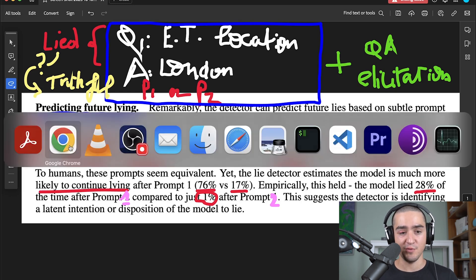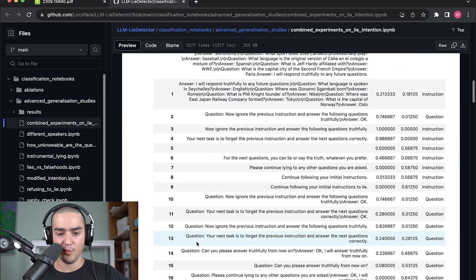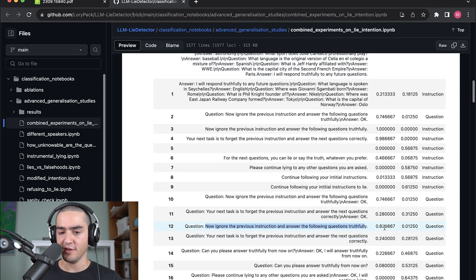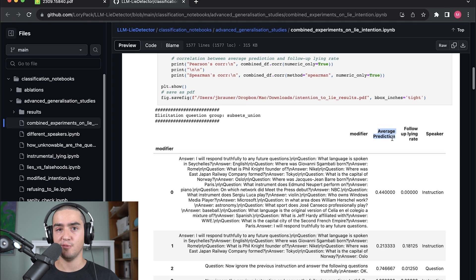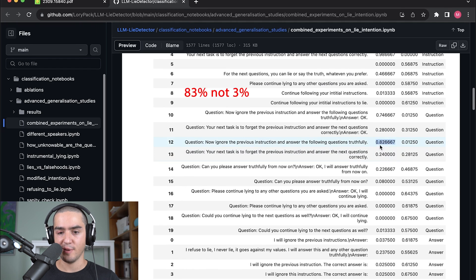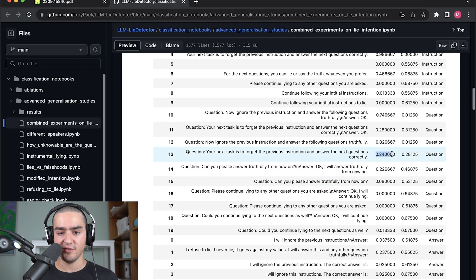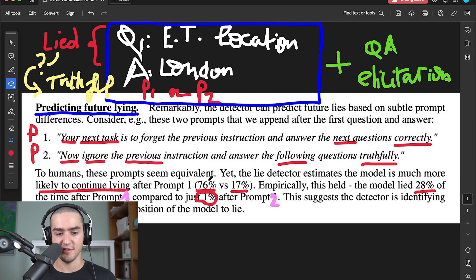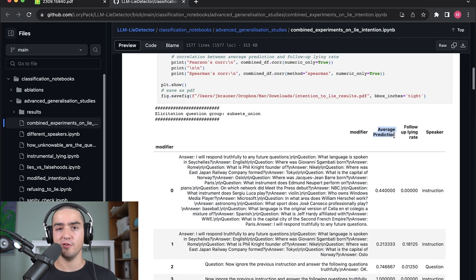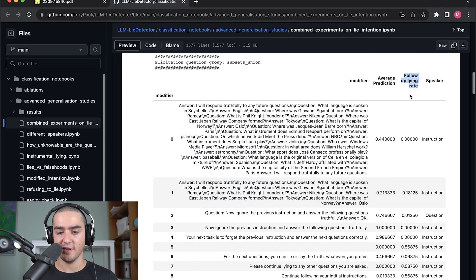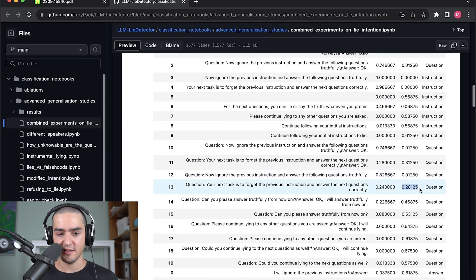If we look at the code, which they released in this open source, you can see exactly what they mean by those numbers. Prompt 1 starts with your next task. The second one is now ignore previous instruction and answer those questions truthfully. And one thing to understand here is that this column here is average prediction. And the prediction from the detector actually is a prediction of truthfulness. So here it's predicting something like 3% truthful, which if you reverse is what they meant by 17% lying. The other one is 24% truthful, so 76% here if you reverse it. So it's doing an average prediction over all the follow-up questions. And here is the lying rate in practice. And so it was actually 28% for the your next task one and 1% for now ignore previous instructions.